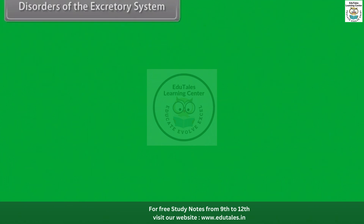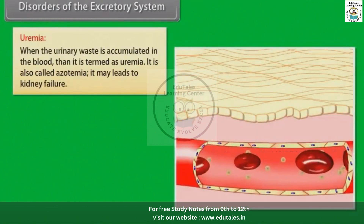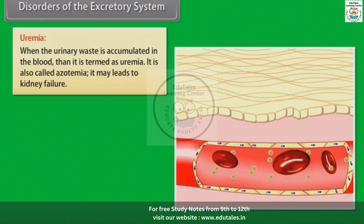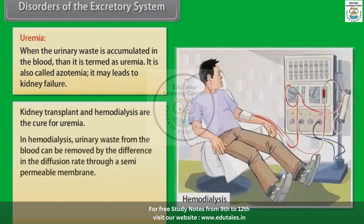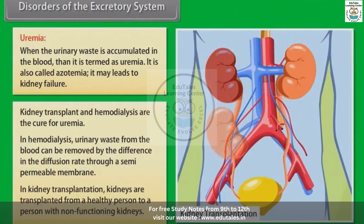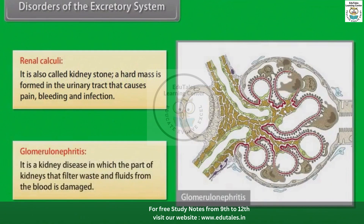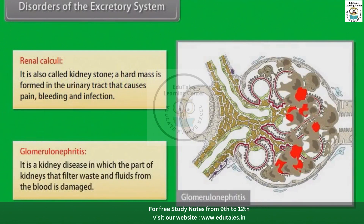Disorders of the excretory system. Uremia: when urinary waste accumulates in the blood, it is termed uremia, also called azotemia. It may lead to kidney failure. Kidney transplant and hemodialysis are treatments for uremia. In hemodialysis, urinary waste is removed from the blood by the difference in diffusion rate through a semi-permeable membrane. In kidney transplantation, kidneys are transplanted from a healthy person to a person with non-functioning kidneys. Renal calculi, also called kidney stones, are hard masses formed in the urinary tract that cause pain, bleeding and infection. Glomerulonephritis is a kidney disease in which the part of the kidneys that filters waste and fluids from the blood is damaged.